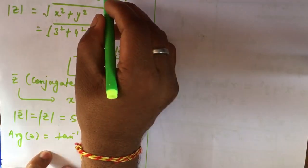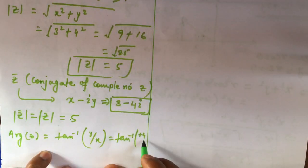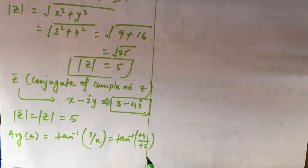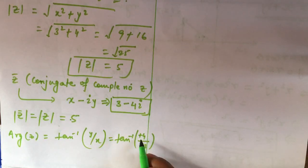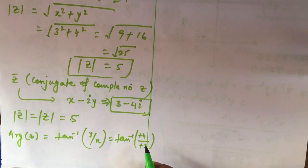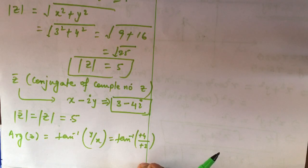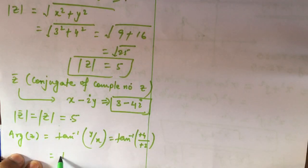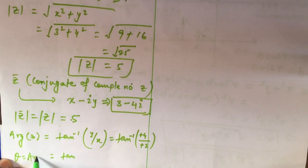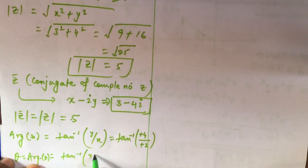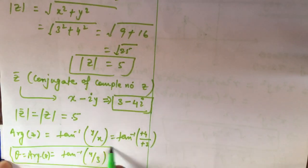The argument is tan⁻¹(y/x). One important thing to remember: always take y and x with their signs. Here y is +4 and x is +3, so arg(z) = tan⁻¹(4/3). Taking y and x with their proper signs gives the principal argument value, which lies in the range −π to π.